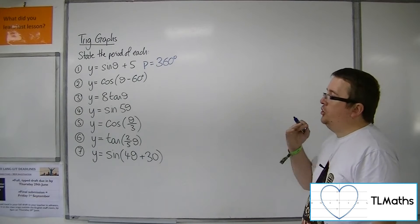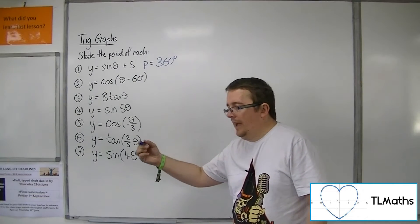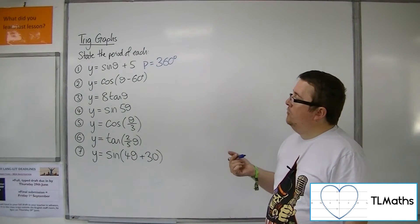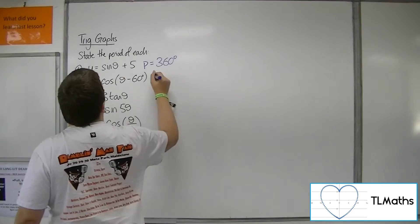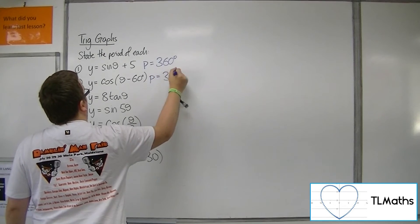So it's not going to change how often the cosine curve will repeat, and so it will stay the same at 360.